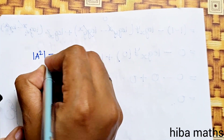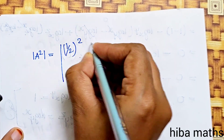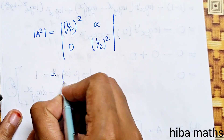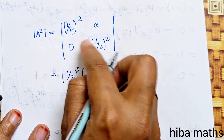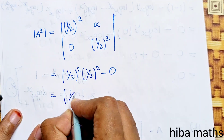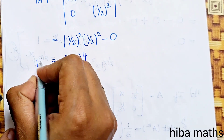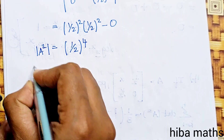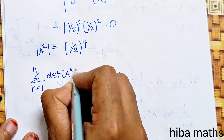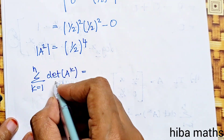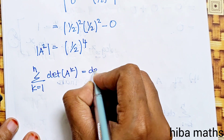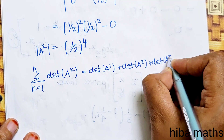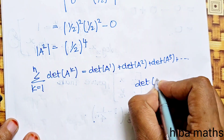The determinant of A squared is (1/2)² × (1/2)² - 0·α = (1/2)^4. In general, the determinant of A^n equals (1/2)^(2n). So determinant of A^1 = (1/2)², determinant of A² = (1/2)^4, and so on up to determinant of A^n = (1/2)^(2n).